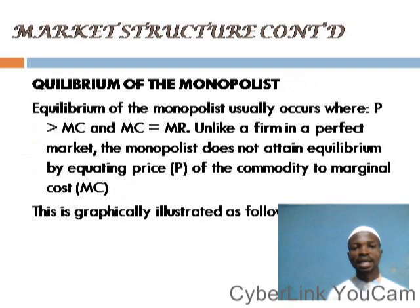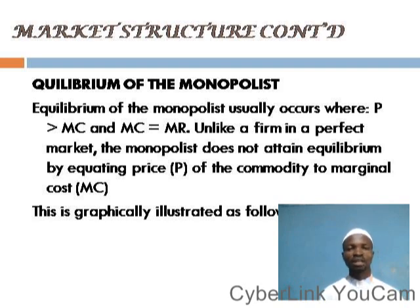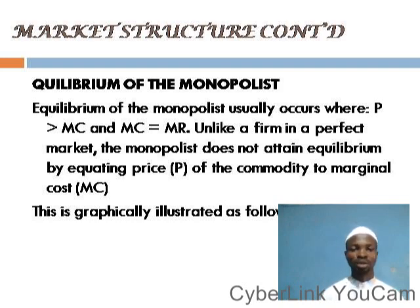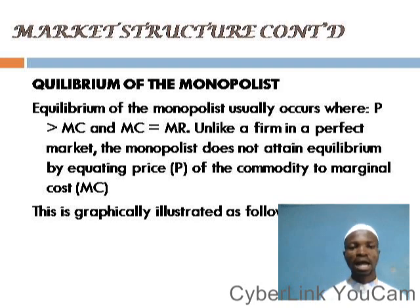Next, let's look at the equilibrium of the monopolist. The monopolist is in a better position to maximize profit both in the short run and the long run, because he is the only one and the commodity he sells has no substitute. He is a price setter — he determines the price at which he sells. So by doing so, he is in a better position to maximize profit and make excess profit both in the short run and the long run.